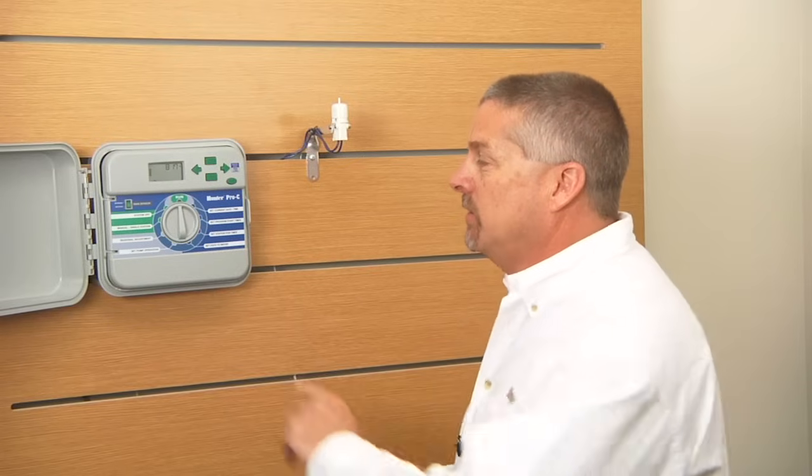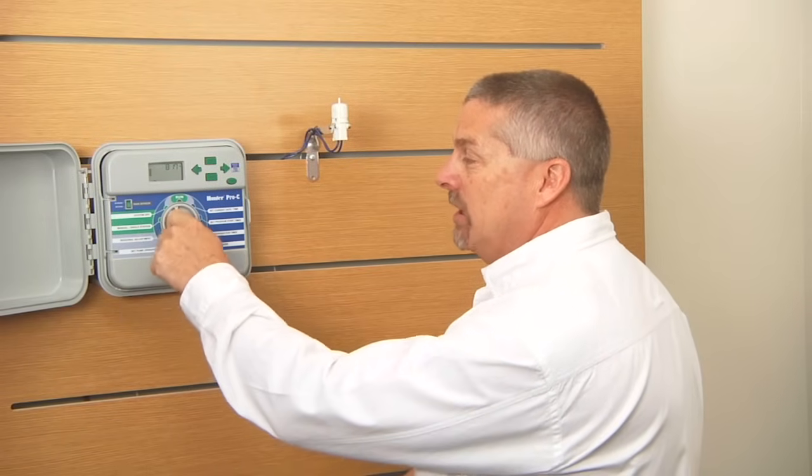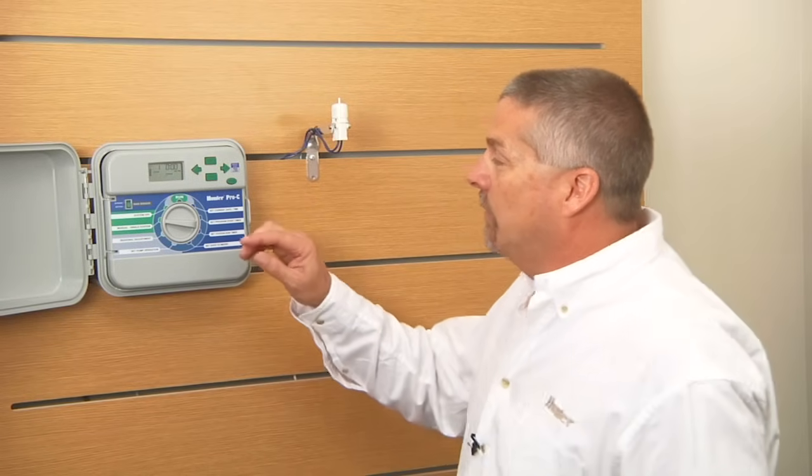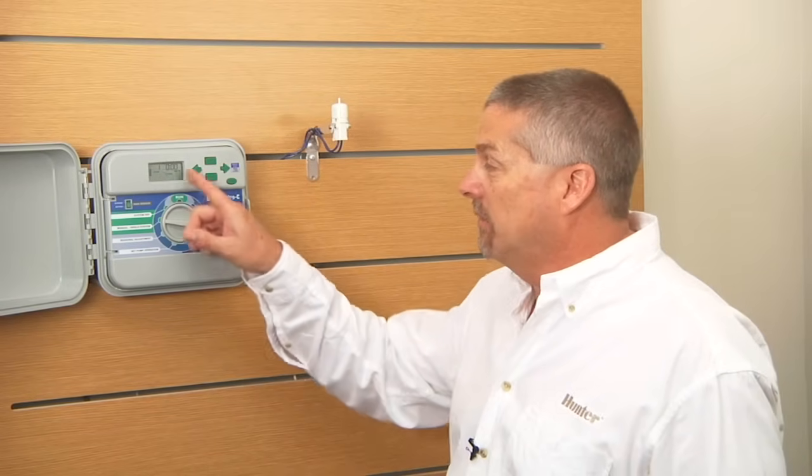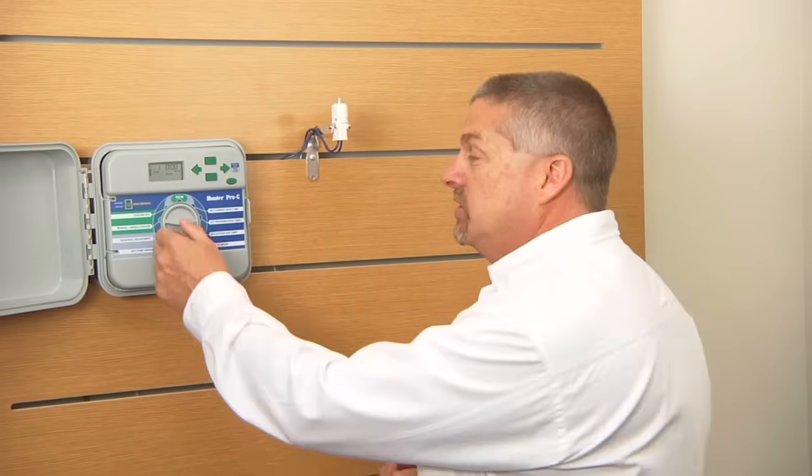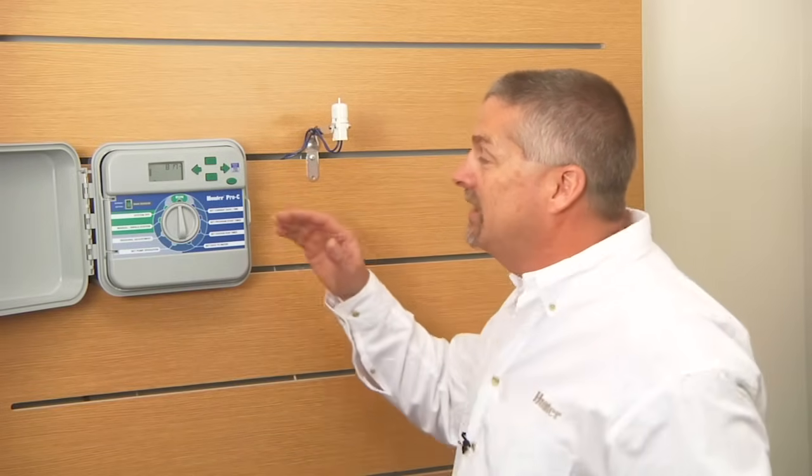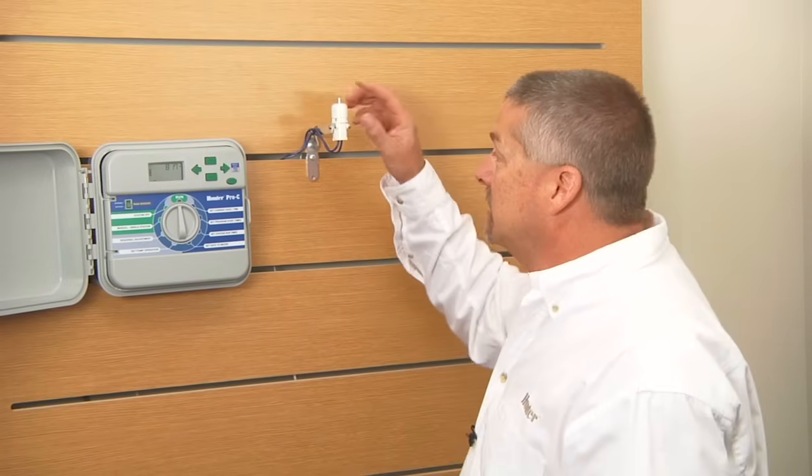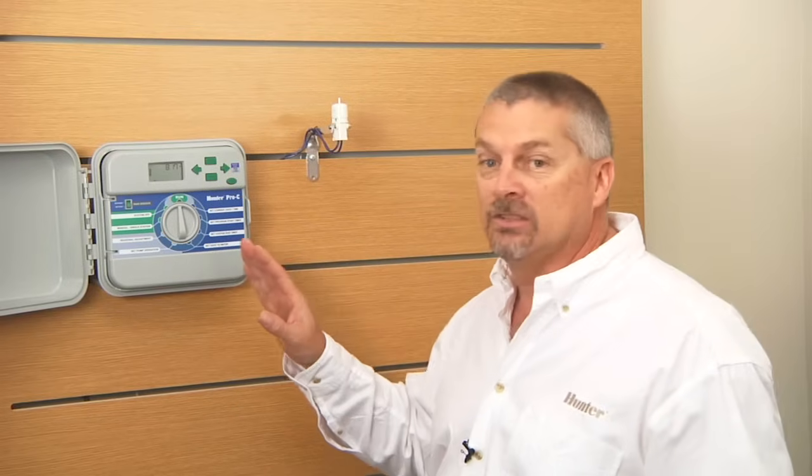So if you have a manual all station on your dial, that feature, you want to go to manual all stations and you'll want to make sure that you've got a couple of stations with runtime there. Just go back to the run position and it'll start the entire program. That mimics a regular pre-programmed start and the rain sensor should interrupt during mid-watering the manual all stations or program.